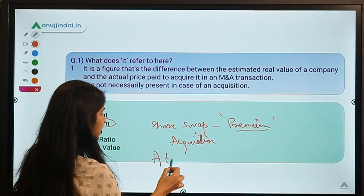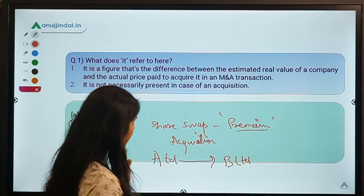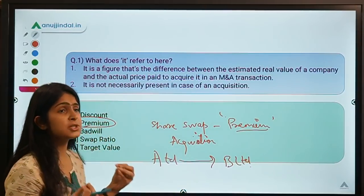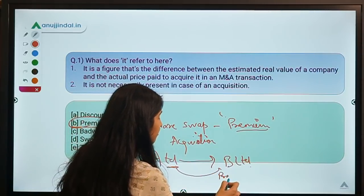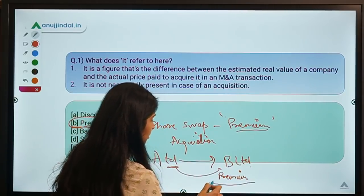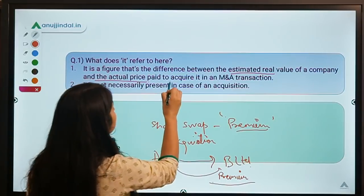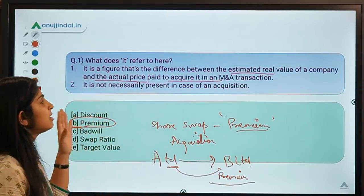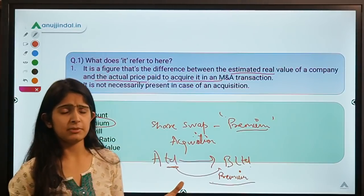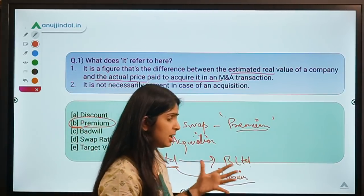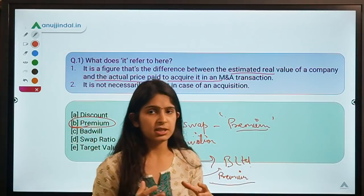Now try to put this in the context of acquisition. When one company — let's call it A Limited — is going to buy another company, B Limited, that is no different than shopping. If the deal holds great growth potential for A Limited, then A Limited might be willing to pay some premium. Premium is the difference between the estimated real value of the company and the actual price paid in a mergers and acquisitions transaction.